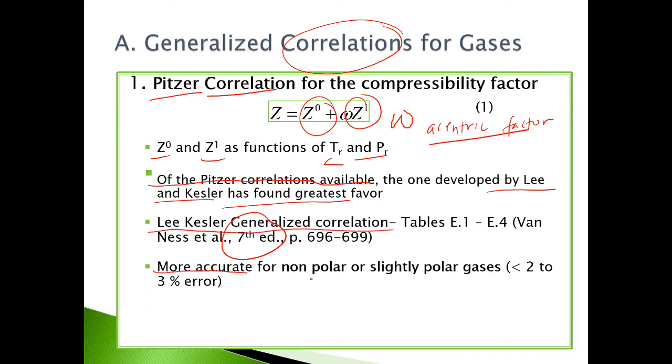The Lee-Kessler Correlation is more accurate for non-polar or slightly polar gases, applicable for those with less than 2 to 3 percent error. However, do not use it for polar gases; when applied to polar gases, the error is large.